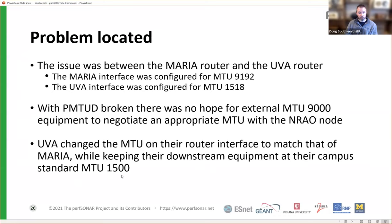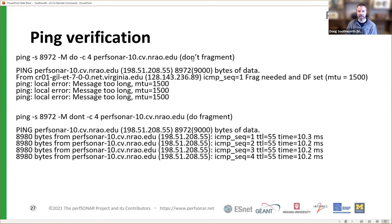They scheduled a maintenance window and corrected the MTUs — setting the UVA interface to match Maria at 9192. To verify, we ran pings using the -M do flag, which sends a packet at 9000 MTU minus TCP overhead while forbidding fragmentation. This is actually what we want to see: 'Message too long, MTU is 1500.' That means the routers are talking to each other, path MTU discovery is clean the whole way through, and at the point where the MTU changes, the router responds saying it can't handle that packet size.